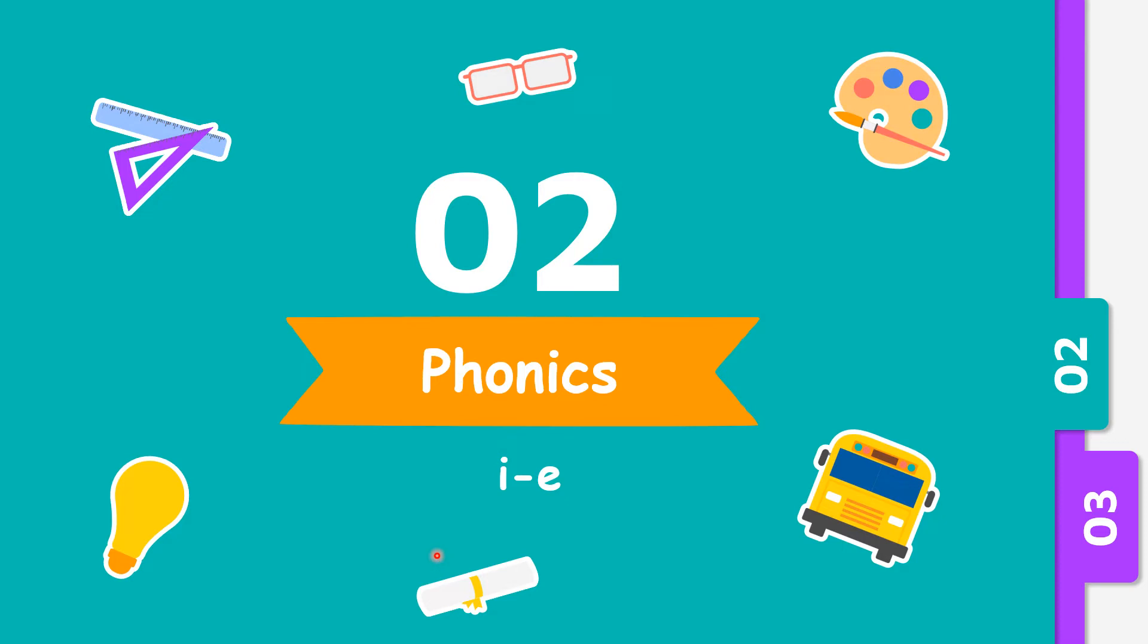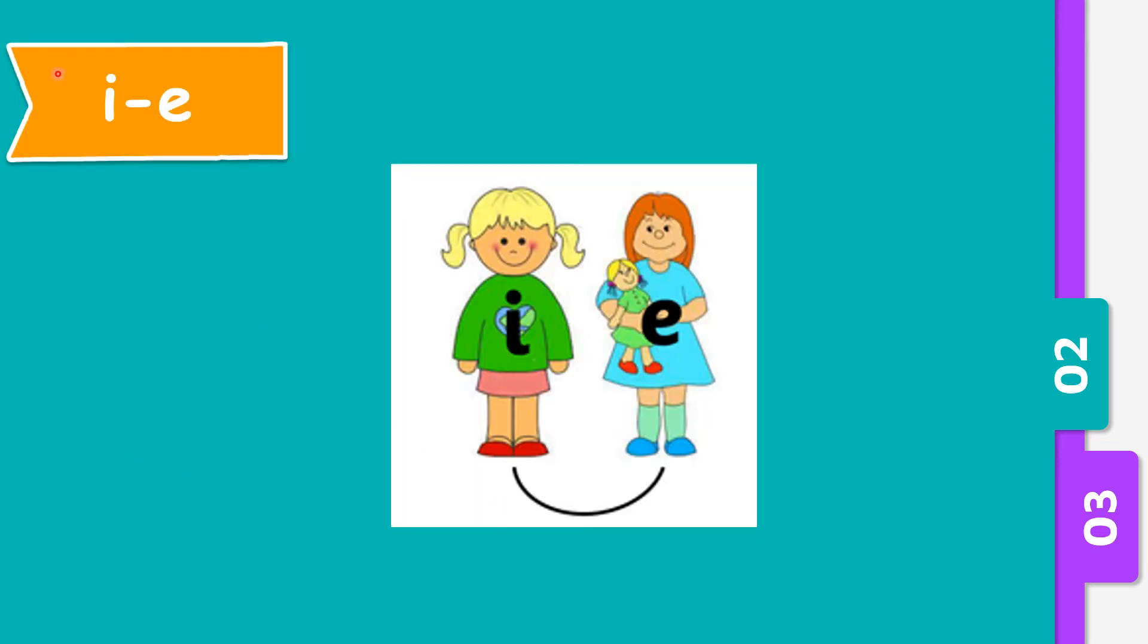Next one, I split EE. When we see I split EE, it is also known as a split digraph. A split digraph means two letters that form only one sound. However, the letters are separate.